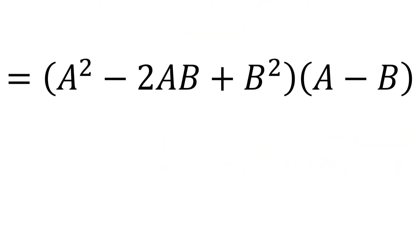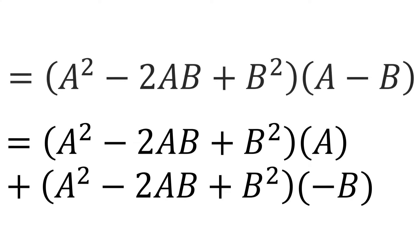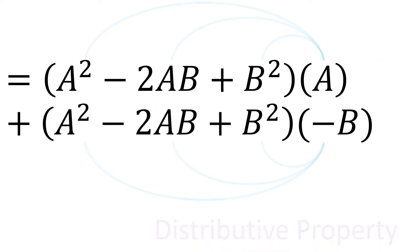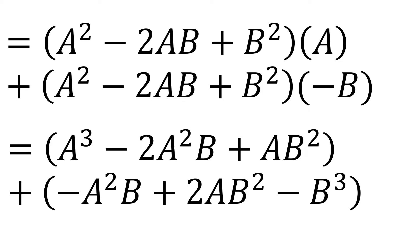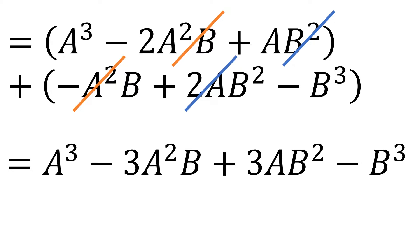By the distributive property, this is equal to (a squared minus 2ab plus b squared) times a, plus (a squared minus 2ab plus b squared) times negative b. Using the distributive property once again and combining like terms, this equals a cubed minus 3a squared b plus 3ab squared minus b cubed.